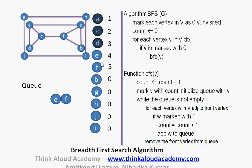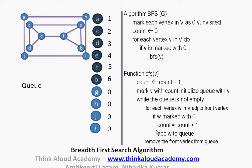Then the next element is E. For each vertex adjacent to E — A, F, and B — A and F are already marked with some number, and the only one not marked is B. So we increment the count to 6, make B's value 6, and add B into the queue. Then I check is there anybody adjacent to E left over — all are covered, so E just drops off. Then we have F, and from F I can go to only three nodes — C, E, and B — and all have been covered. So there is nobody else left from F, and F gets dropped off. Then the element left is B. From B I can only go to F and E, and both have been visited. So from B there is nobody else left, and I drop off B.